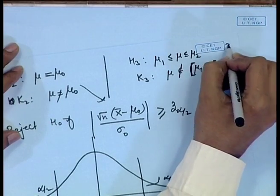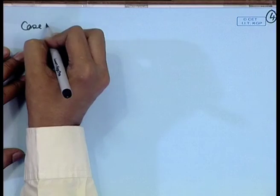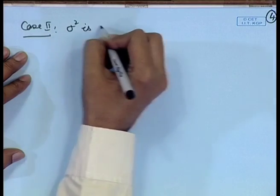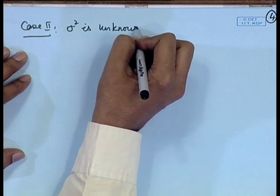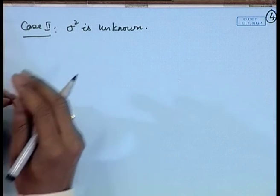Difficulty will arise when σ² is unknown, because in that case we cannot use the known σ₀ value. As in the case of confidence intervals, the σ² value is replaced by its estimate s². The test function will then be dependent upon a t-distribution, because √n(x̄ − μ₀)/s follows a t-distribution on n−1 degrees of freedom when μ = μ₀ is considered to be true.